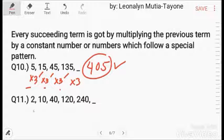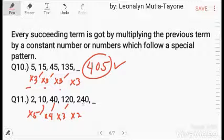Next, this one. We multiplied by 5 and that is 10. Multiplied by 4 and that is 40. So, 40 times 3 that is 120 and 120 times 2 that is 240. So, 240 times 1 is 240. The answer here is 240.